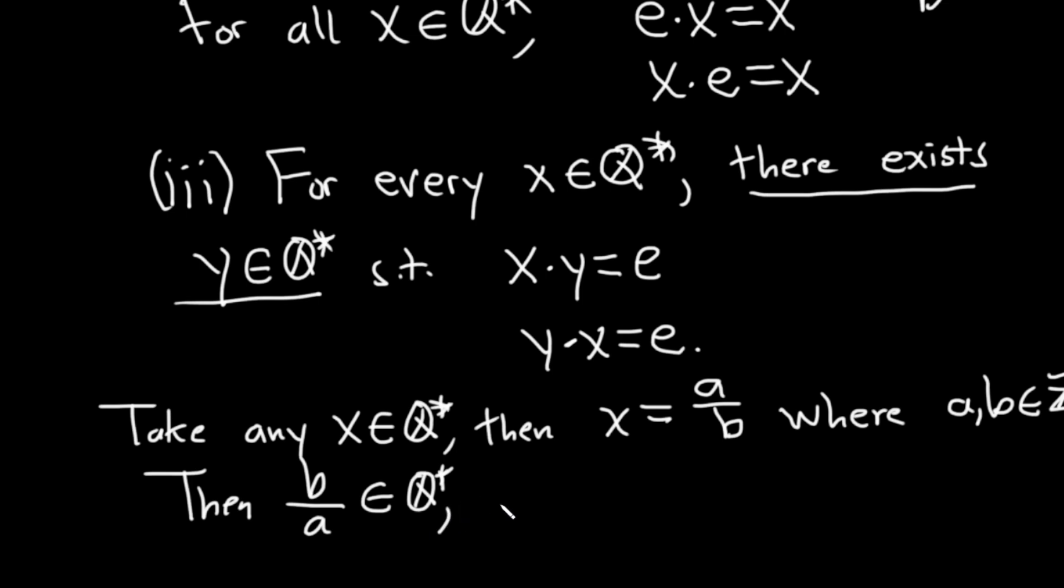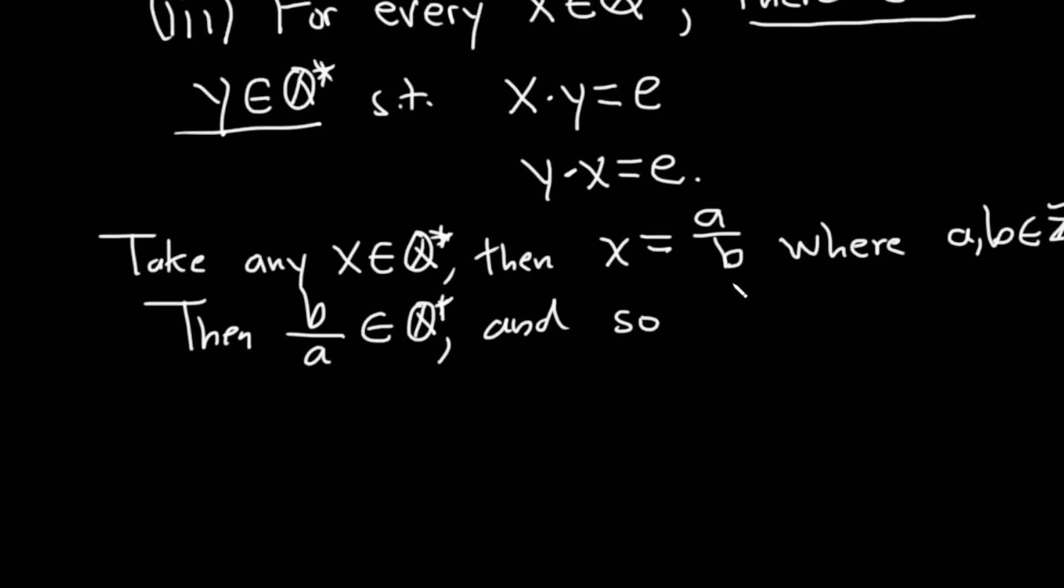Now, then, let's do the multiplication. So if we do X times Y, so A over B times B over A, what happens? Well, using ordinary rules of multiplication, we know these cancel. You just get one. Same thing, B over A times A over B is just going to give you one. So there's our inverse.